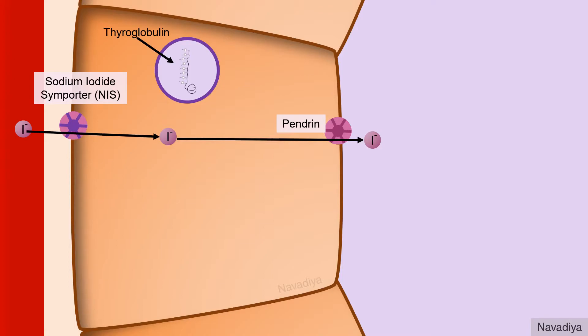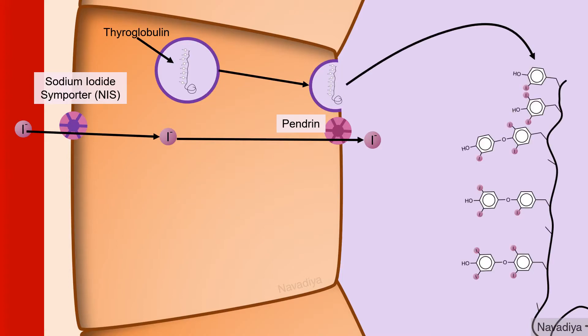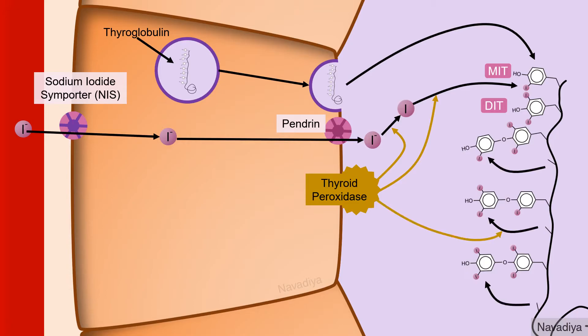Let's have a quick summary. First, iodide uptake by sodium iodide symporter. Then its transport into the lumen by pendrin. Parallel synthesis of thyroglobulin. Its release into the colloid. Oxidation of iodide into iodine. Iodination of tyrosine residues to form mono and diiodotyrosines.